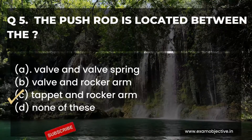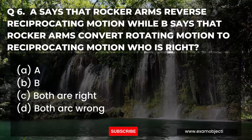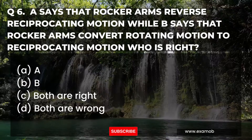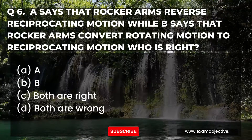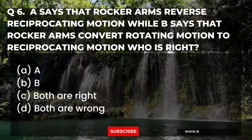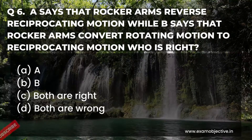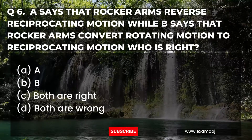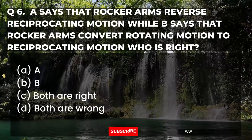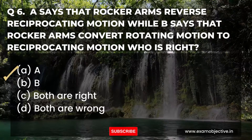Question number six: A says that rocker arms reverse reciprocating motion, while B says that rocker arms convert rotating motion to reciprocating motion. Who is right? Option A: A, B: B, C: both are right, D: both are wrong. The answer is option A — A is right.